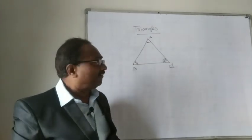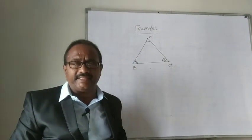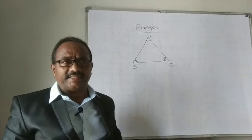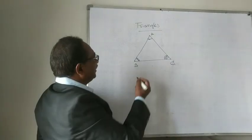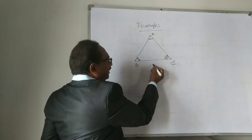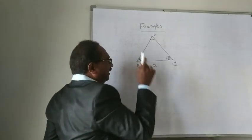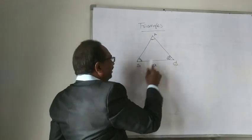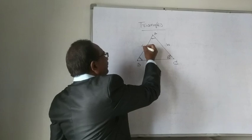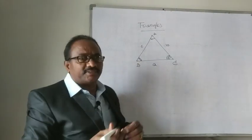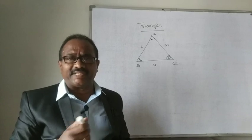This triangle has three angles and three sides, where AB, BC, CA are the sides and angle A, angle B, angle C are the angles. The sum of these three angles is 180 degrees. The side BC is represented by small letter 'a' because it is opposite to angle A. Similarly, AC is represented by small letter 'b' because it is opposite to angle B, and AB is represented by small letter 'c' because it is opposite to angle C. So angles are represented by capital letters and lengths of sides by small letters.